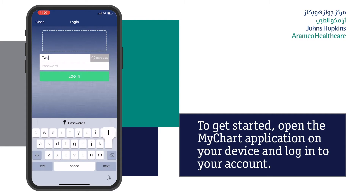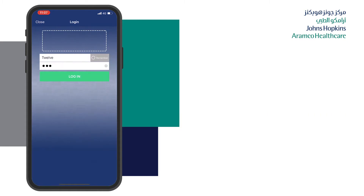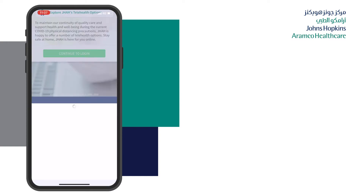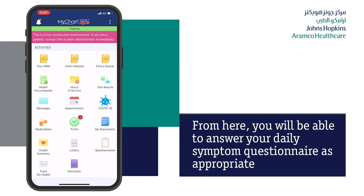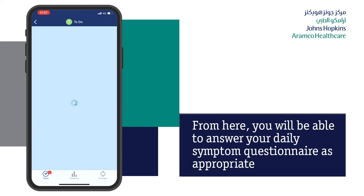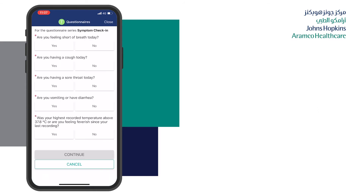To get started, open the MyChart application on your device and log into your account. From the home screen, tap the To Do Activity. From here, you will be able to answer your daily symptom questionnaire as appropriate.